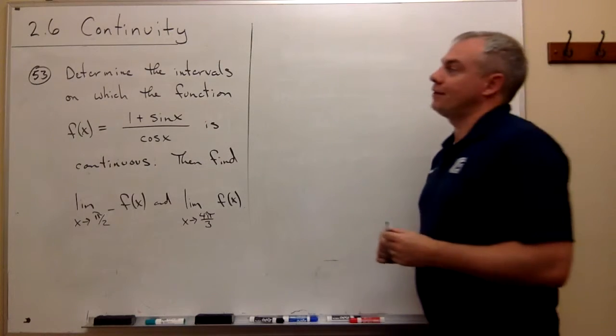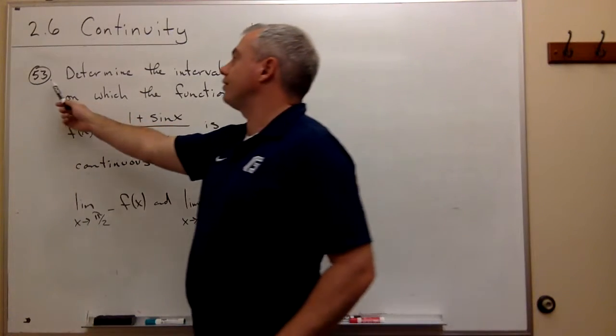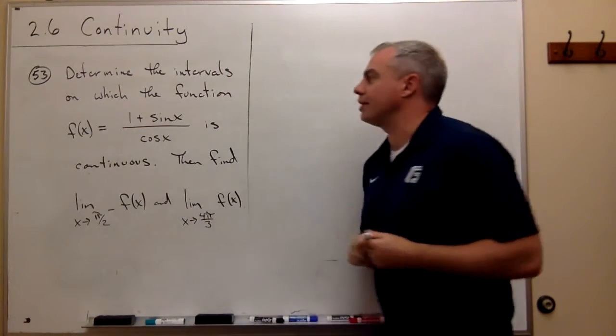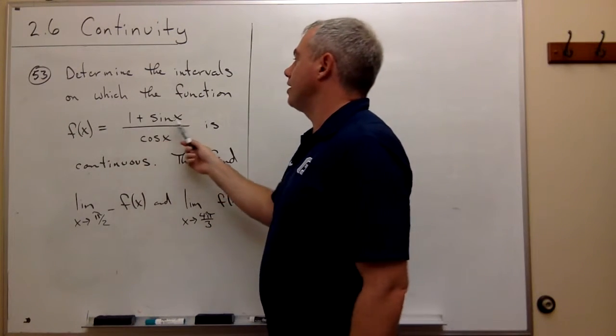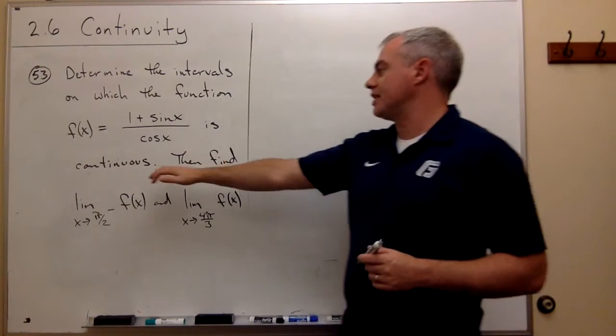Now, let's take a look at problem number 53. In problem 53, we're asked to determine the intervals on which the function f(x) equals 1 plus sine x over cosine x is continuous.